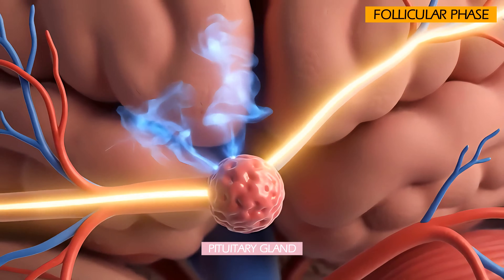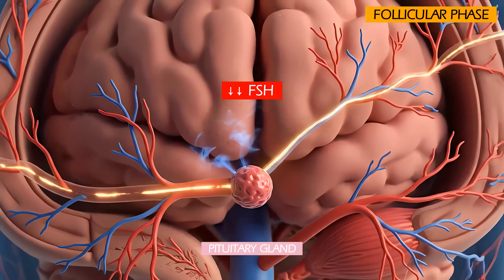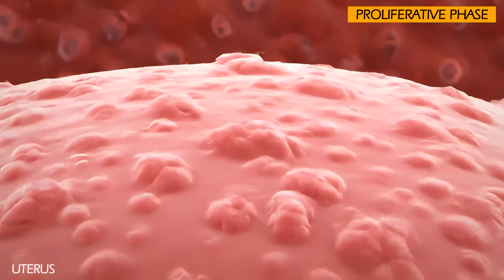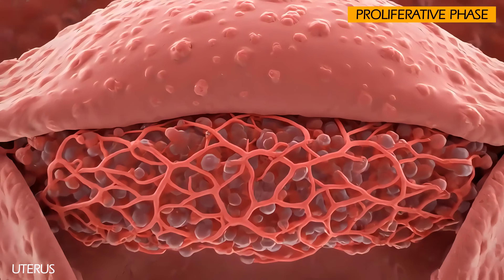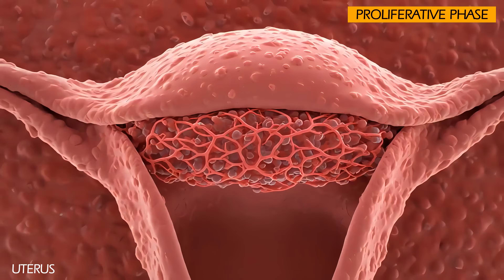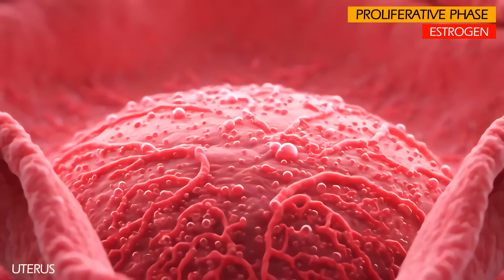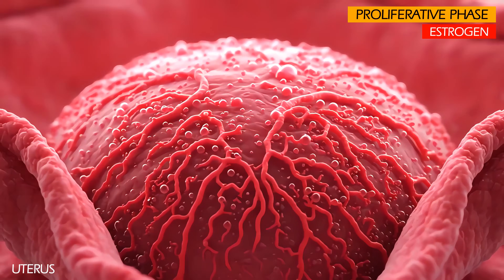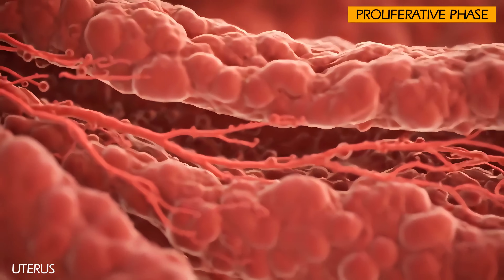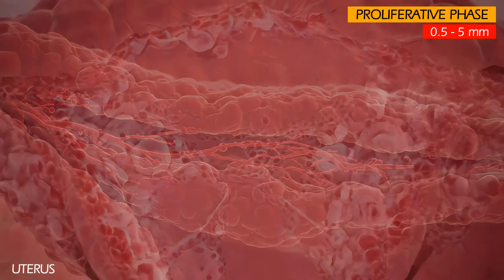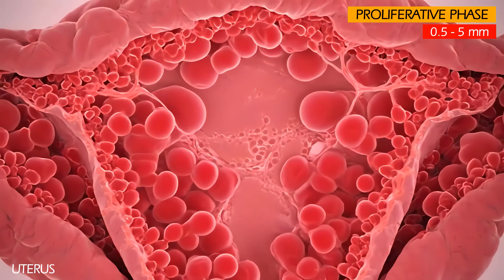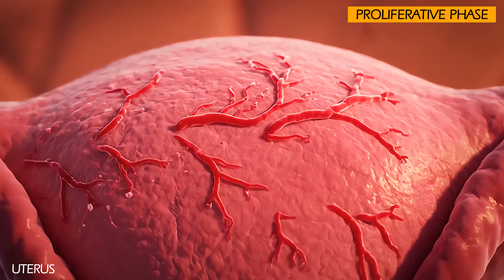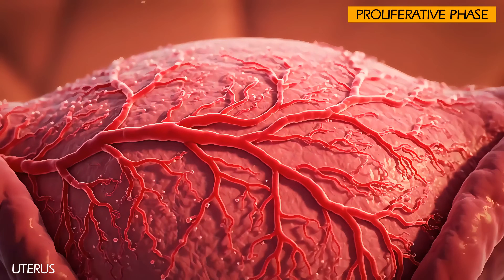This increase in estrogen begins to inhibit the secretion of FSH. The rising tide of estrogen produced by the growing follicles acts on the basal layer of the endometrium, which remained after menstruation. Estrogen stimulates the regeneration and rapid growth of the functional endometrial layer. This uterine lining thickens from approximately 0.5 mm to 5 mm, with elongation of uterine glands and spiral arteries, creating a nutrient-rich environment for a potential pregnancy.